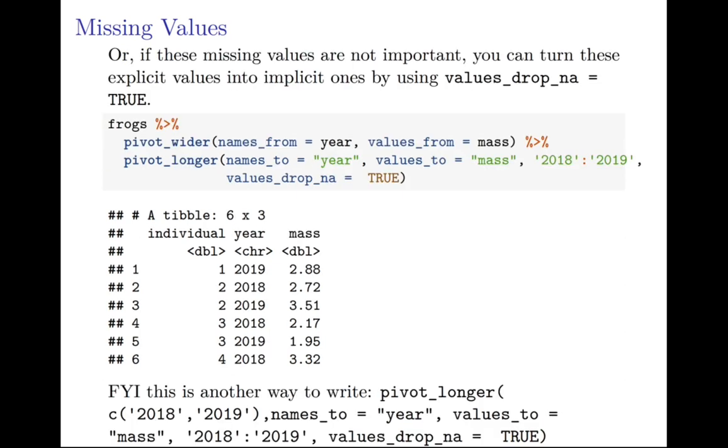Or if these missing values are not important, you can turn these explicit values into implicit ones by using values_drop_na equals TRUE. Kind of a mouthful, but you can find this in the documentation for these functions - pivot_wider, pivot_longer. Here, if you take frogs, pivot it wider, and then pivot it longer, you go back to a data frame, a tibble, where you have all implicit NAs. We use a little fancy coding here with this 2018 colon 2019, and that's just another way of specifying that first part where you concatenate 2018 and 2019. I thought I'd show you that, although I really prefer the first version.